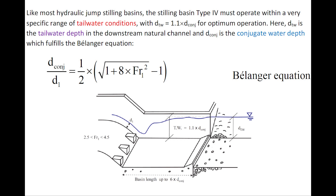Like most hydraulic jump stilling basins, the Type 4 must operate within a very specific range of tailwater conditions, with optimum operation when the tailwater depth equals 1.1 times the conjugate depth. The conjugate depth is the depth that fulfills the Bélanger equation, shown here.